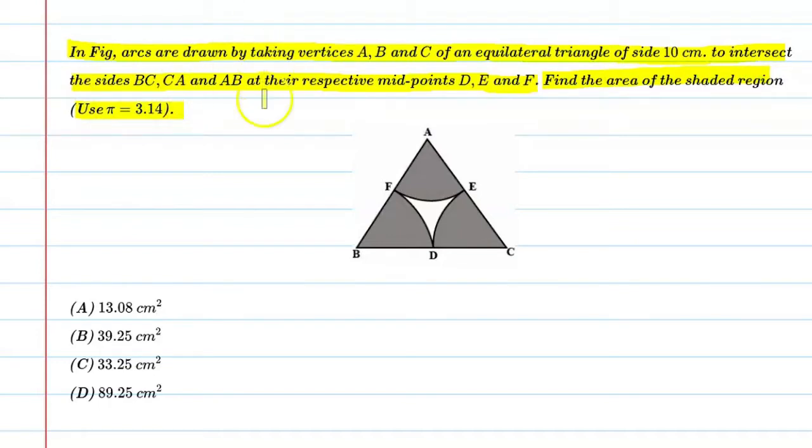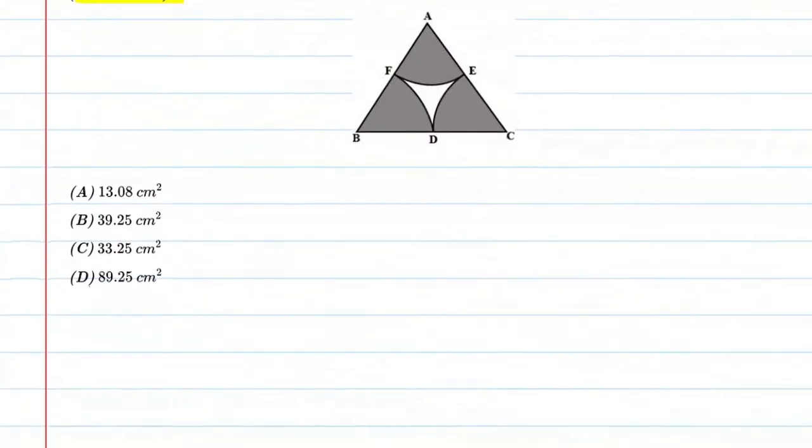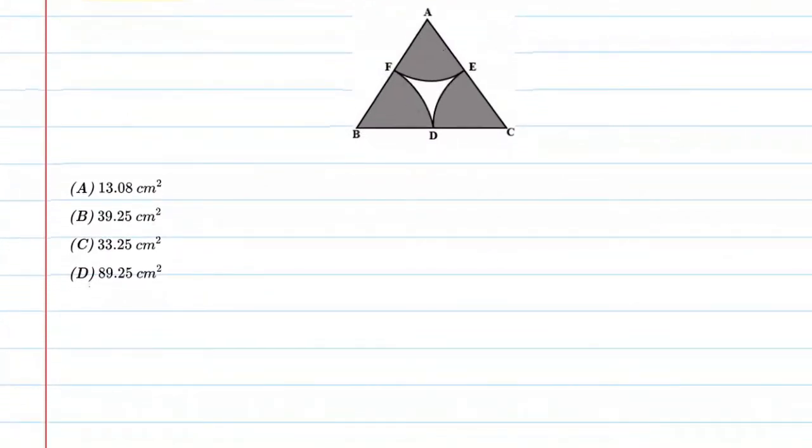Okay, so what did it say? It said that this is an equilateral triangle, and each vertex has drawn an arc like this. The arc is to the midpoint of each side, and the equilateral side is 10 cm. So what is the area of the shaded region? Basically, these are three sectors, and the equilateral triangle angle is 60 degrees.